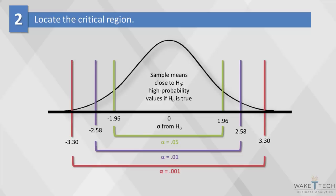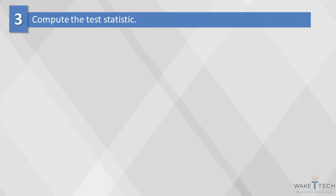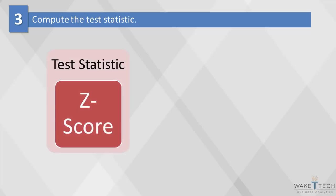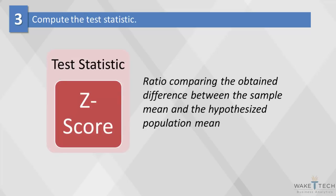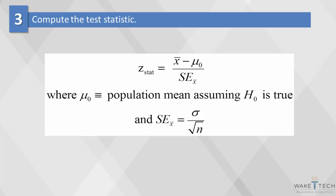For example, if alpha is 0.05, our result is significant if it's less than 0.05. Once we decide whether we want to measure accuracy at the 10%, 5%, or 1% level, we can compute the test statistic. Here we will use the z-score, which is a ratio comparing the obtained difference between the sample mean and the hypothesized population mean. This is an example of a one-sample test of a mean when the standard deviation sigma is known. In our male weights example, we're going to use the z statistic because we know the population mean and the population standard deviation.